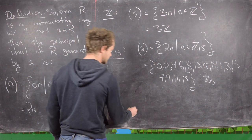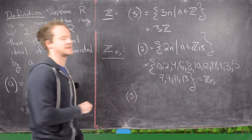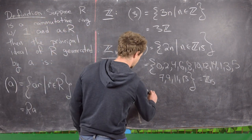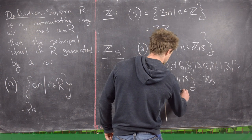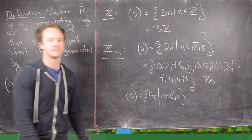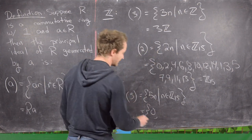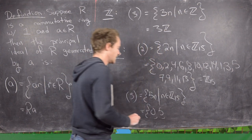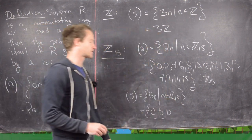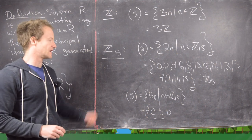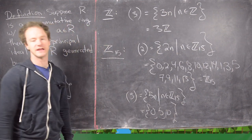Let's look at the ideal generated by 5 in Z15. That gives us: 5 times 0 which is 0, 5 times 1 which is 5, 5 times 2 which is 10, and 5 times 3 which is 15 — but 15 is back at 0. So we have just those three elements: {0, 5, 10}.